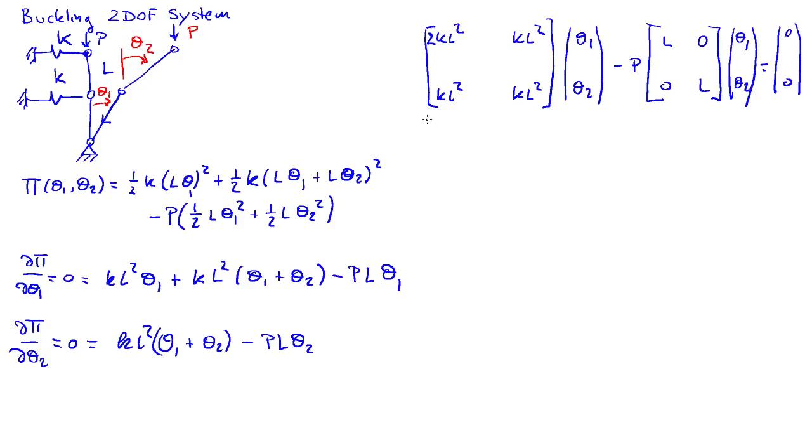We can call this K, and so we're looking at an eigenvalue problem of (K - P G) times a vector of thetas equals 0.